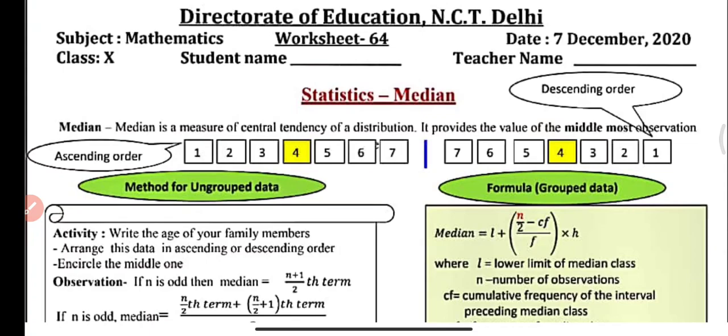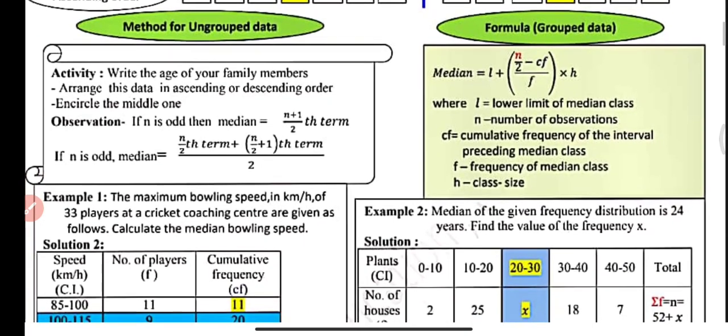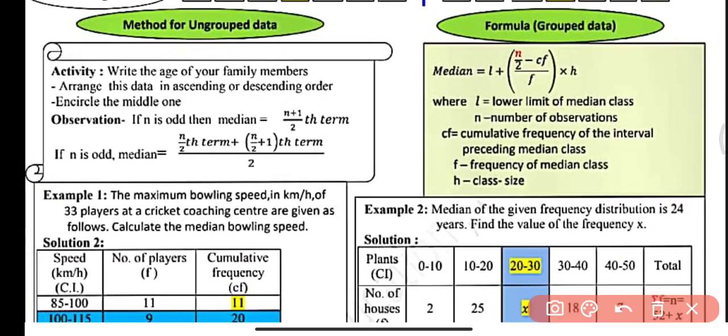Now, how to find the median for ungrouped or grouped data. When the data is ungrouped, we are given numbers in series form and n is the number of observations. When n is odd, the median will be the (n+1)/2 th term. For example, if we have 7 observations, we arrange them in ascending or descending order, and the median will be the (7+1)/2 = 4th term.